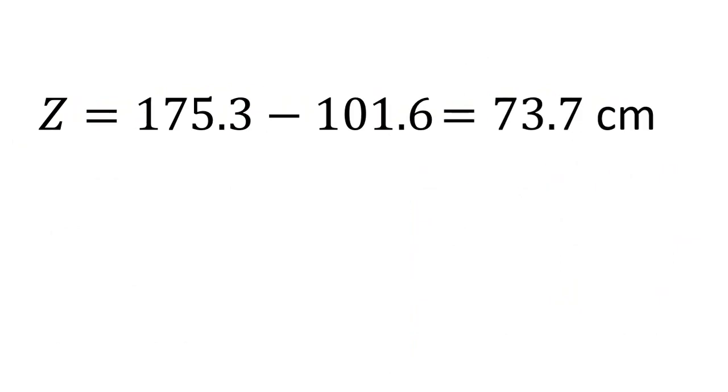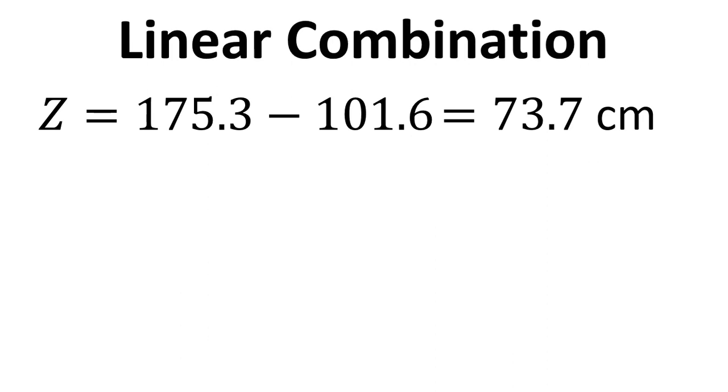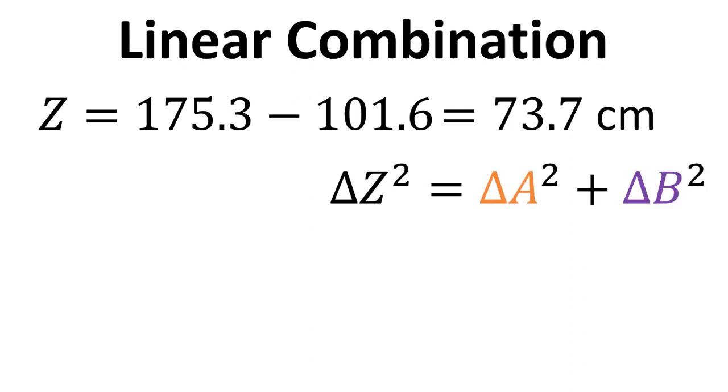So in this case, again, it's fairly straightforward to work out the value of Z. And again we consider this to be a linear combination. So linear combinations are anything to do with adding or subtracting values. And the formula we use for this is delta Z squared equals delta A squared plus delta B squared.